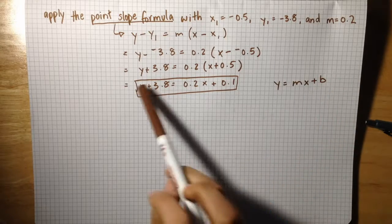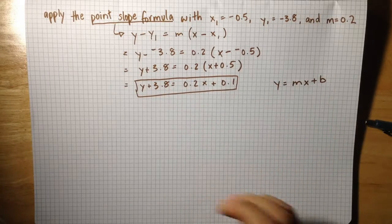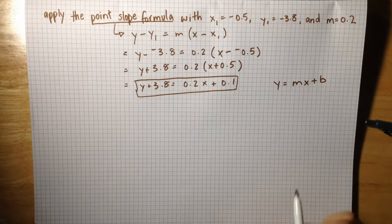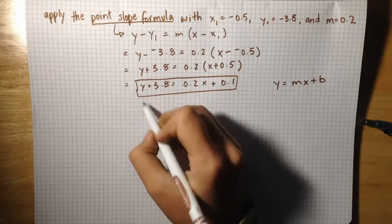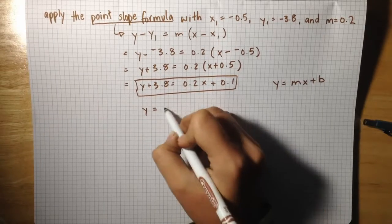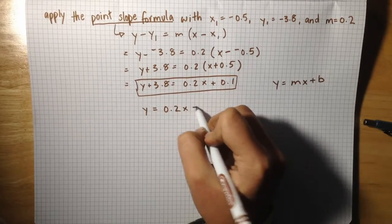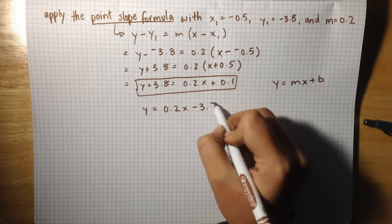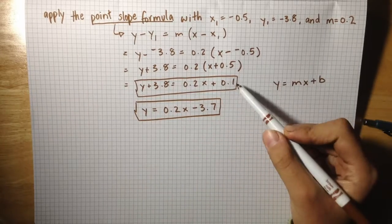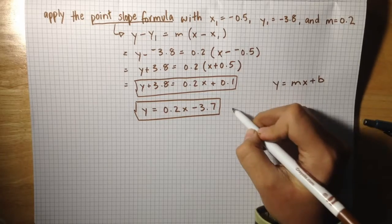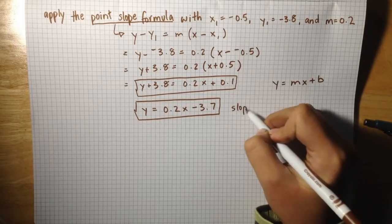You would just need to clear y on one side of the equal sign by subtracting 3.8 to the other side and getting y equals 0.2x minus 3.7 as how to write this equation in slope-intercept form.